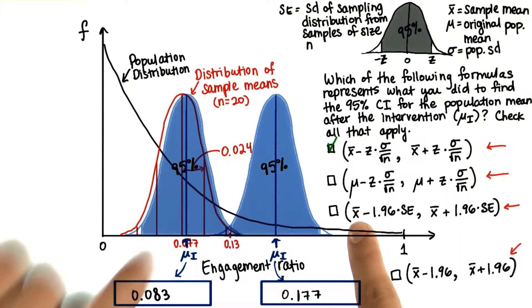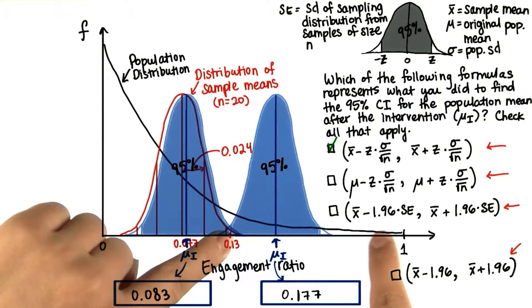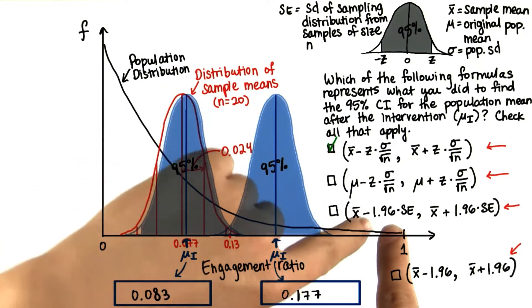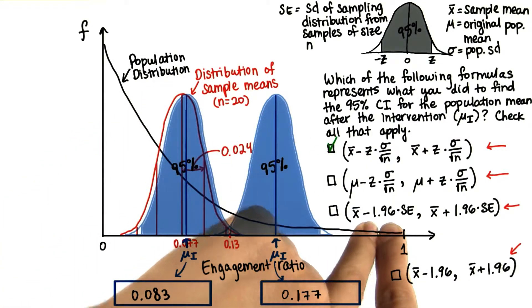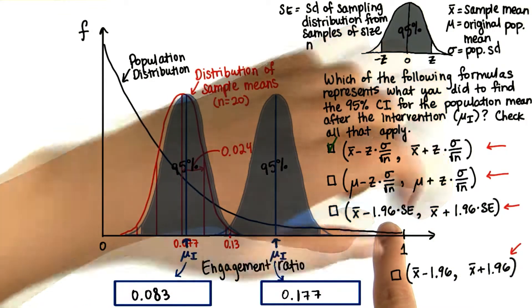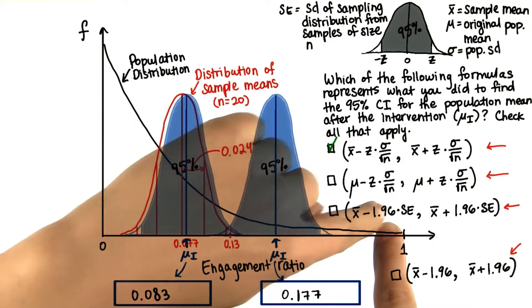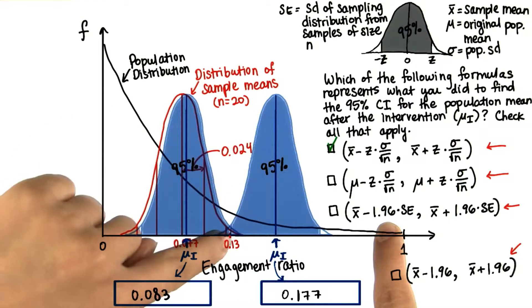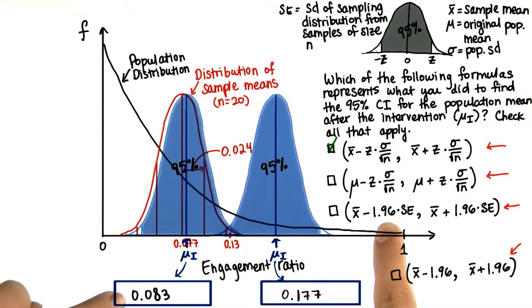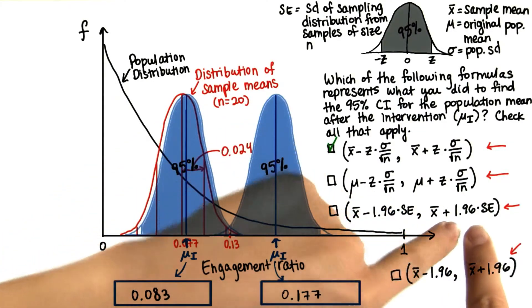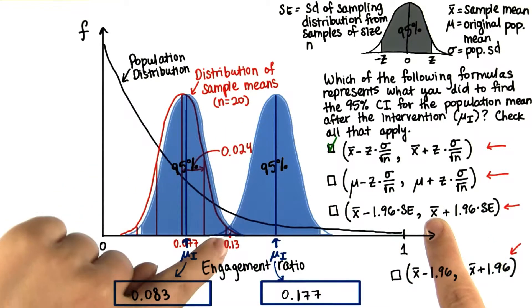This third one, we have our sample mean minus, and instead of z, we have the actual z value, 1.96 times the standard error. So we have 1.96 standard errors less than this sample mean. So that is what we did. And same with over here. We have 1.96 standard errors plus the sample mean.